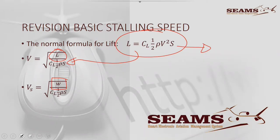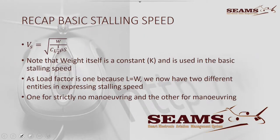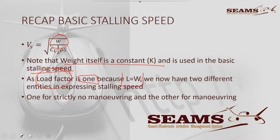Here we've got two formulas. This formula has a variable in lift; this one has a non-variable in weight. Basic stall — Vs — uses the weight. We've said weight is a constant, and it's used in the basic stalling speed. The load factor is 1 because lift equals weight.